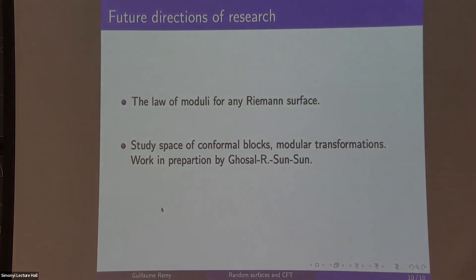Okay, maybe just to finish, I can say I have two outlooks. One thing we think about is trying to do the result we have on the annulus on any Riemann surface, just study integrating over the moduli space. Also we can study these conformal blocks using probability and prove some of their modular transformation properties. I'll stop here. Thank you.